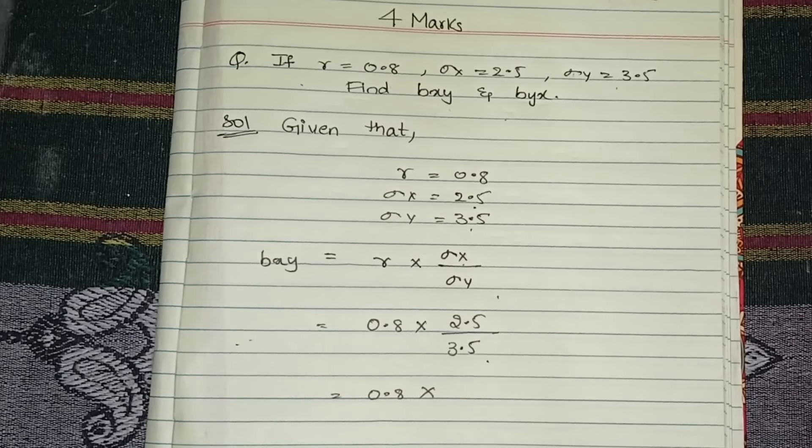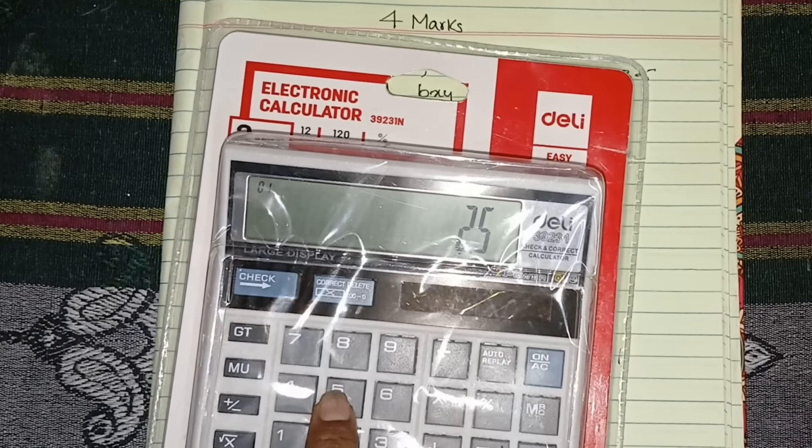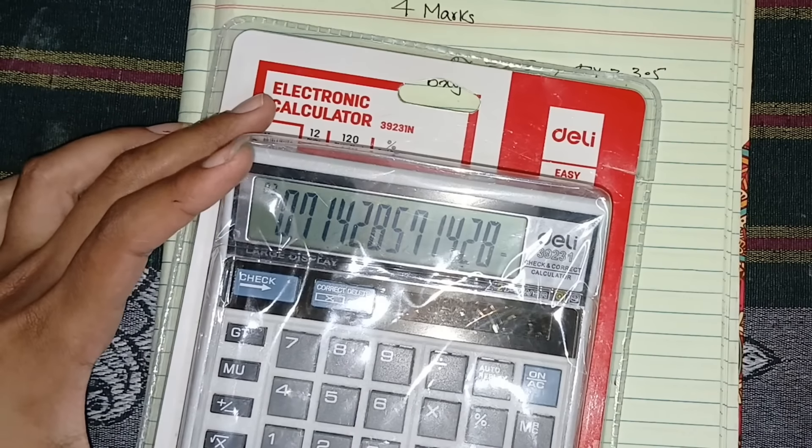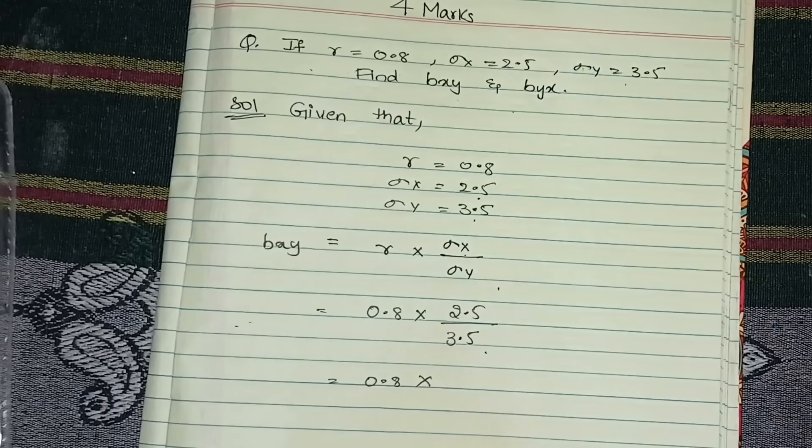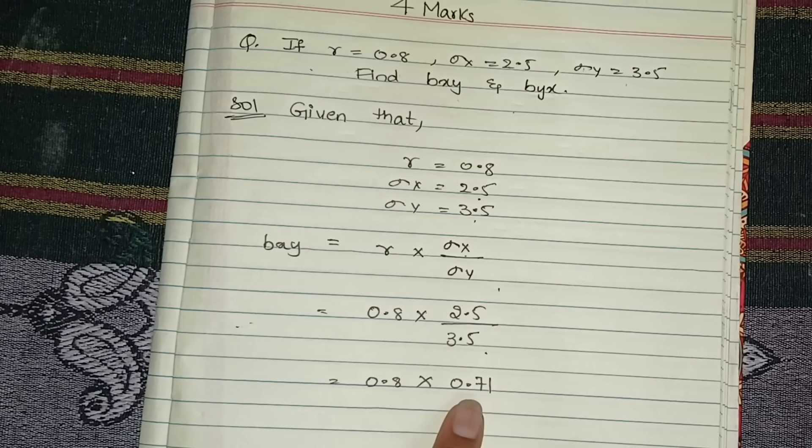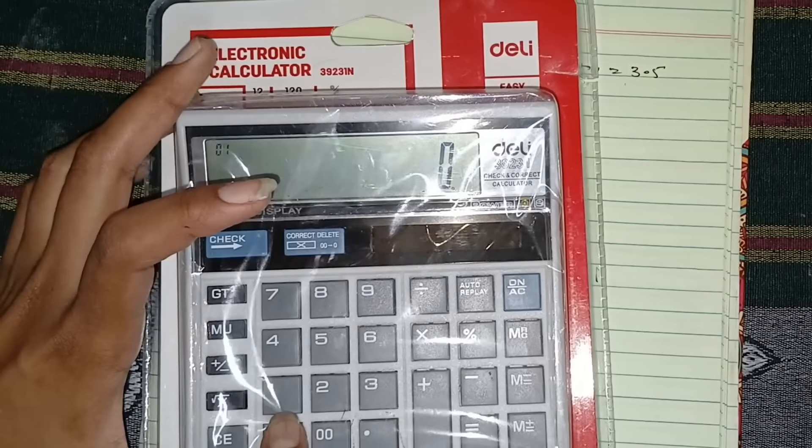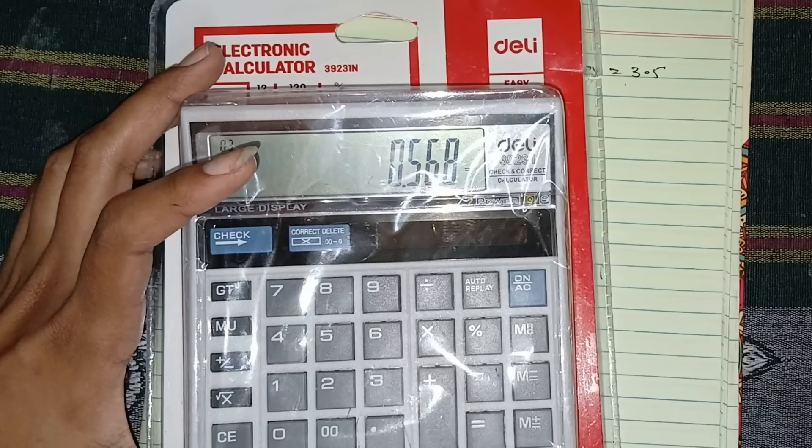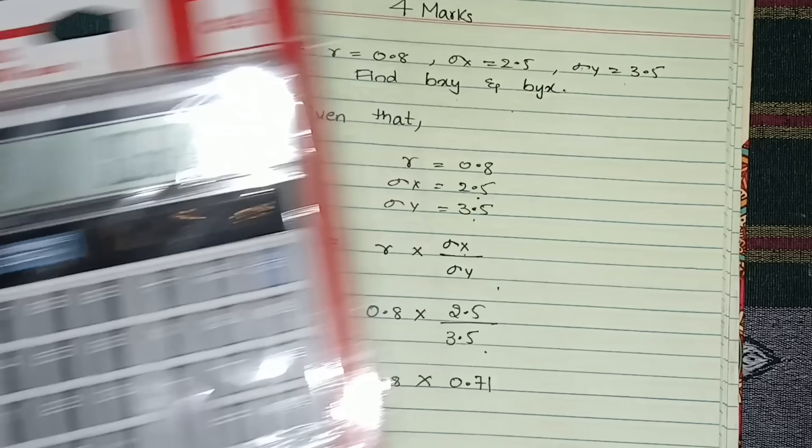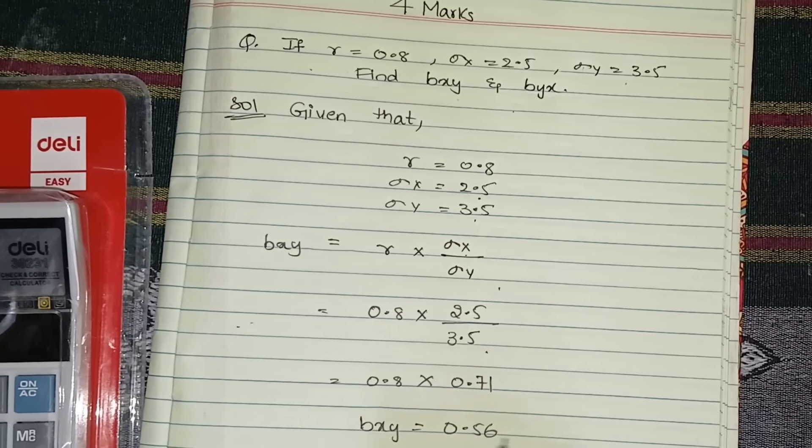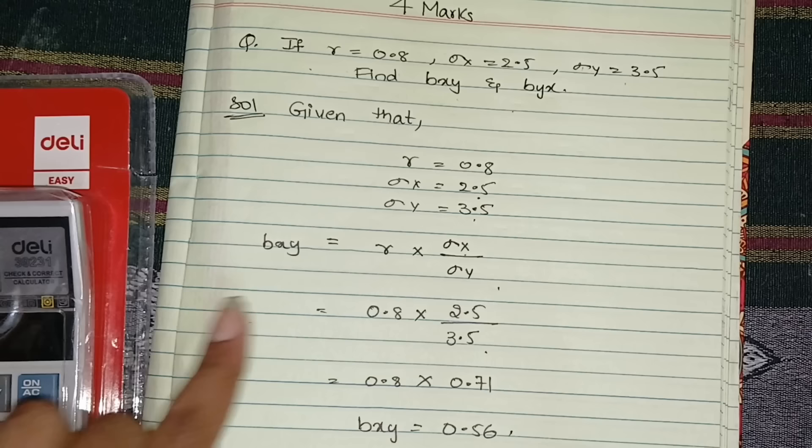So you need to substitute: 0.8 into 2.5 divided by 3.5. So 2.5 divided by 3.5 if you do, you get 0.714. We are taking 0.71, point after two digits is enough. So 0.8 into 0.71, if you do, 0.568 will be the answer. So bxy is equal to 0.56.